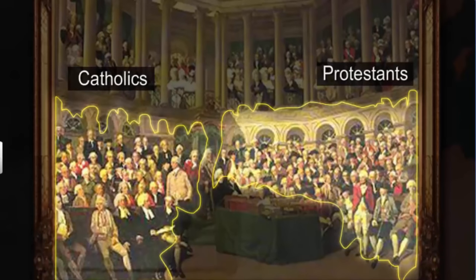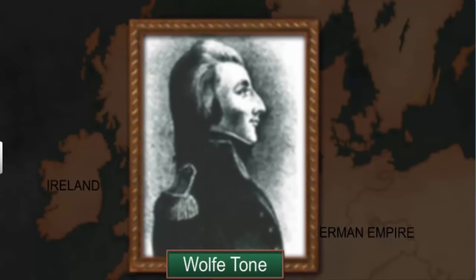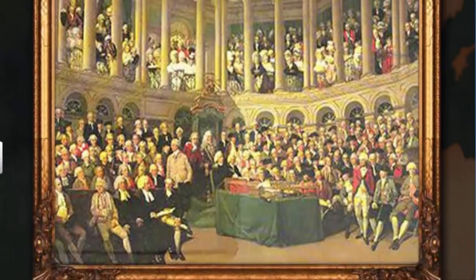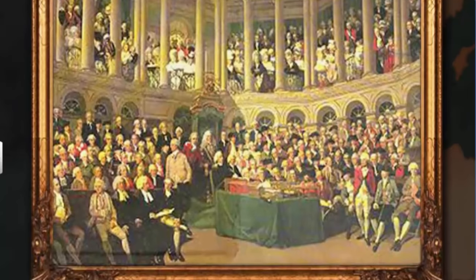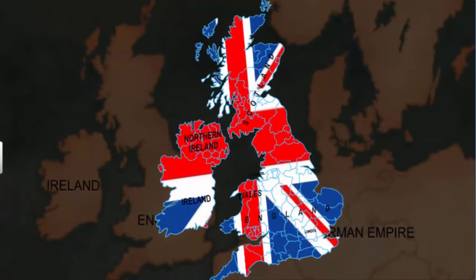Several Catholic rebellions in Ireland were crushed brutally. Wolfe Tone, also known as the father of Irish Republicanism, revolted against the British but failed. In 1801, Ireland was forcibly incorporated into the United Kingdom. The symbols of new Britain were the English language, the British flag — the Union Jack — and the British national anthem.